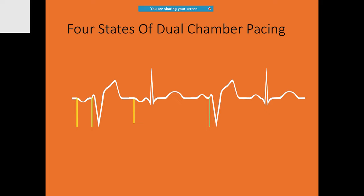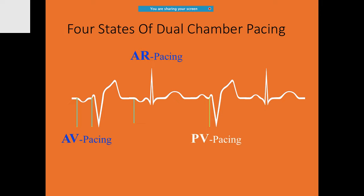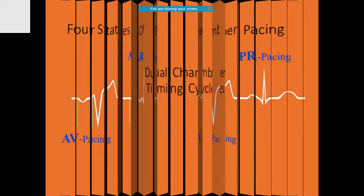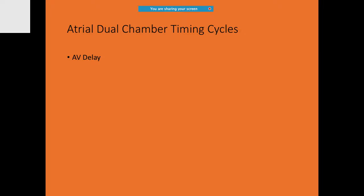There are four states of dual chamber pacing: AV pacing, AV sensing, AR — where the atrium is paced but the ventricle is sensed (PV sensing), and PR pacing. Coming to the timing cycles: these refer to the atrial dual-chamber delay — for example, AV delay and PV delay.